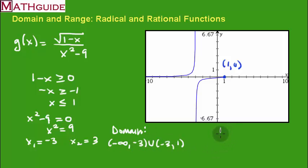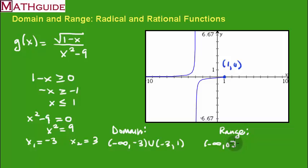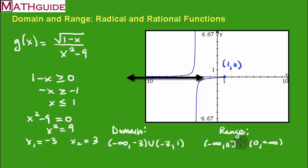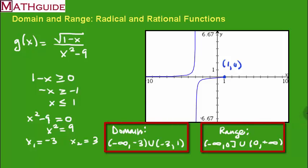Now let's talk about range. The bottom-most branch trails from negative infinity and actually reaches zero — so it went from negative infinity to zero. The next branch was approaching zero and goes up to positive infinity, but that side was not equal to zero. We unite those two sides, and there is our domain and range.